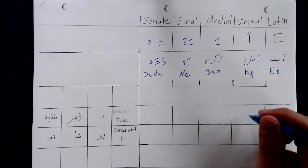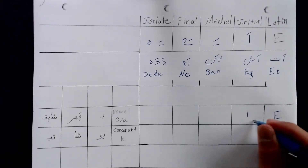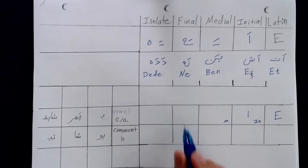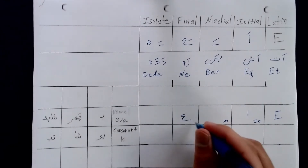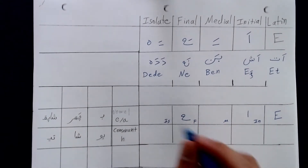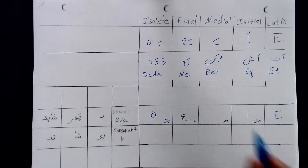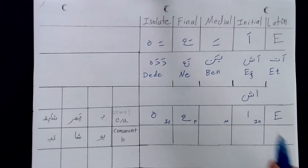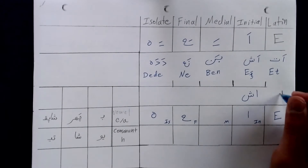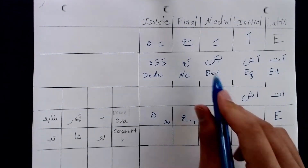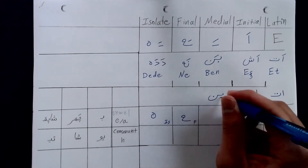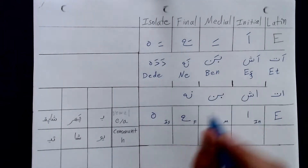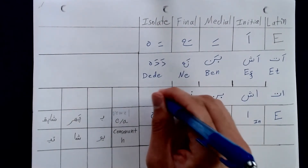The unmarked version is simply initiated with an Elif in the initial position. In the medial position, we don't write anything. In the final position, we simply write H. In the isolated position, we also write the isolated version of H. So: Ish looks like this, It looks like this, Ben is written like this, Ne as such, and Dede likewise.